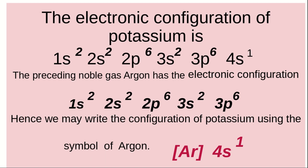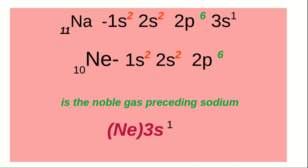Similarly, we can write the electronic configuration of sodium using the noble gas symbol. Which is the noble gas preceding sodium? It is neon. Sodium has atomic number 11, neon atomic number 10. Then we can represent sodium as [Ne] 3S1.